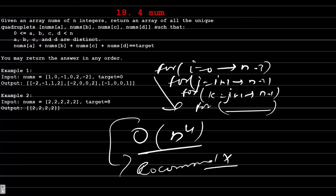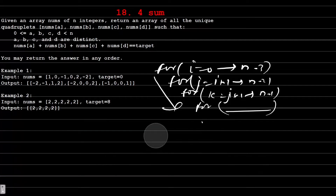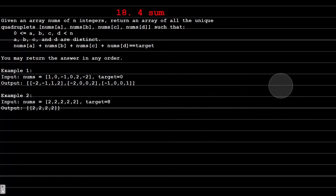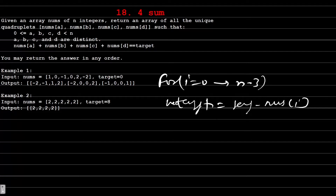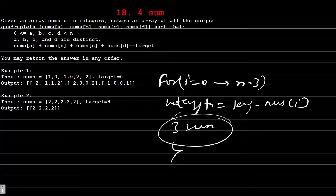So what is the approach we are going to follow? If you have followed the entire playlist, you must have seen the two-pointer method for the two-sum and three-sum problems. We are going to apply the same method here. First we will run a for loop for i from 0 to n-3, update the new target as target minus nums[i], and then solve the 3Sum problem inside this to get the remaining three numbers.